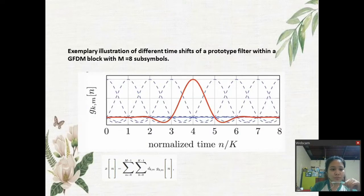Next is the exemplary illustration of different time shifts of a prototype filter with a GFDM block with M equals 8 sub-symbols. Notice that the modular operation in the combination of the prototype filter effectively produces a circular convolution of the upsampled data symbols with a filtered tail-biting filtering as depicted in the illustration.